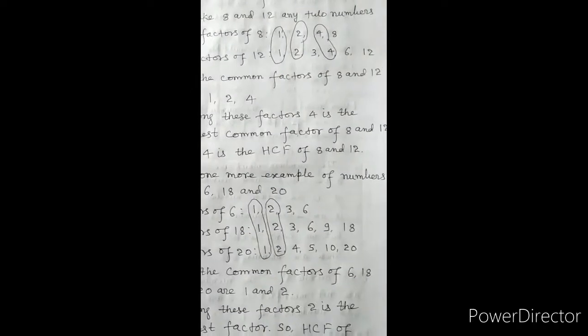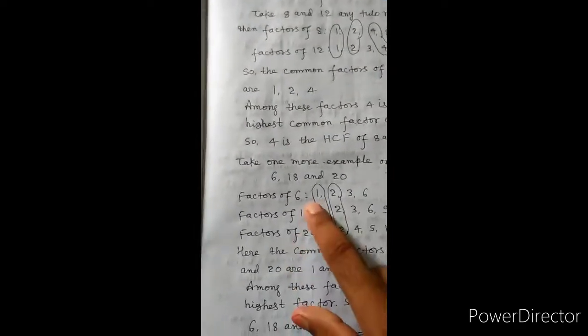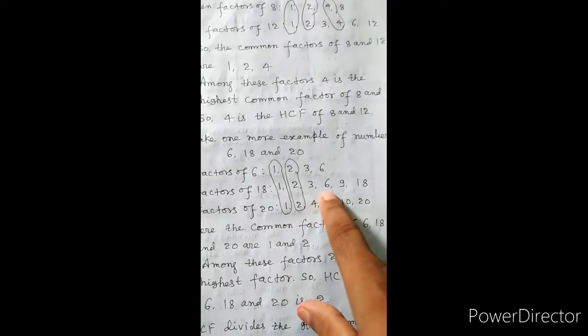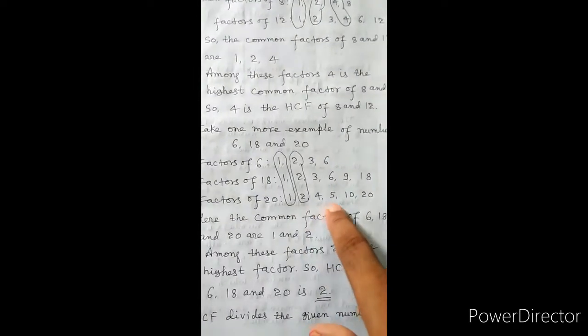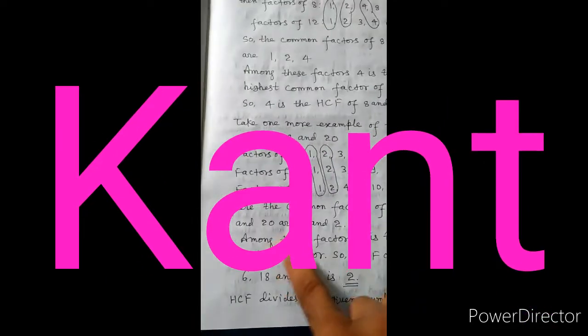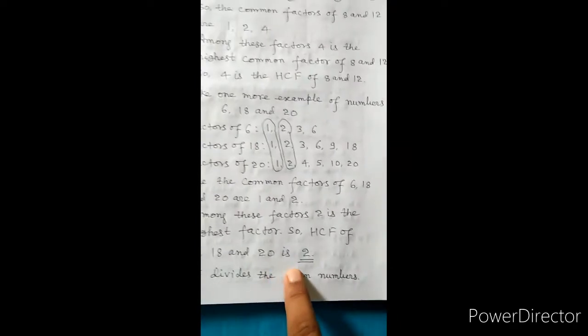Take one more example with numbers 6, 18 and 20 — here are 3 numbers. Factors of 6 are 1, 2, 3, 6. Factors of 18 are 1, 2, 3, 6, 9, 18. Factors of 20 are 1, 2, 4, 5, 10, 20. The common factors of 6, 18 and 20 are 1 and 2. Among these factors, 2 is the highest. So HCF of 6, 18 and 20 is 2.